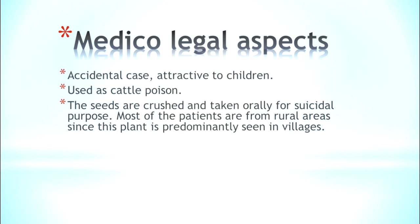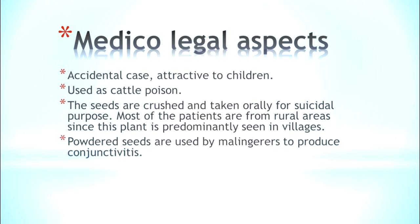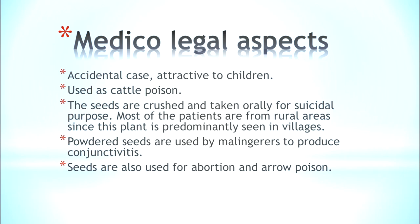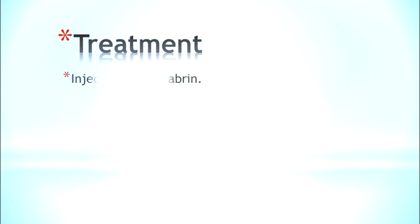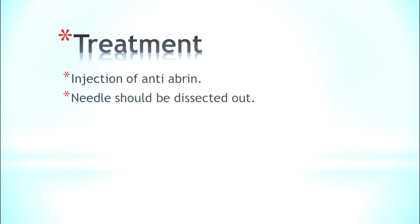The seeds are crushed and taken orally for suicidal purposes. Most patients are from rural areas since the plant is commonly found in villages. The seeds can be powdered and used by malingerers to produce conjunctivitis. They can also be used as an abortifacient. The paste can be applied on an arrow to act as an arrow poison, killing whoever is struck.